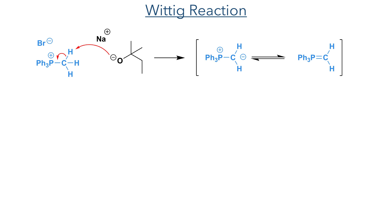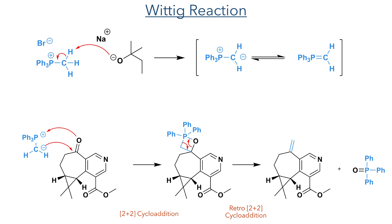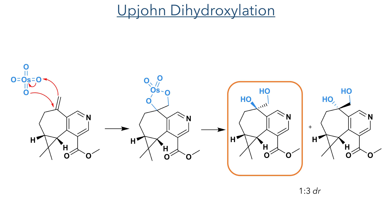A Wittig reaction then followed to install a methylene group. The Wittig reagent is first generated by the deprotonation of methyltriphenylphosphonium bromide by sodium tert-amylate. This undergoes a 2+2 cycloaddition with the ketone and then a retro 2+2 cycloreversion, which decomposes the oxaphosphetane to generate the alkene. An Upjohn dihydroxylation then completed the synthesis. Osmium tetroxide undergoes a cycloaddition with the alkene, which is then hydrolyzed to leave two hydroxyl groups in its place. This reaction was unselective and formed a mixture of products in a 1:3 diastereomeric ratio favouring the undesired ent-Plagiocyanin B.